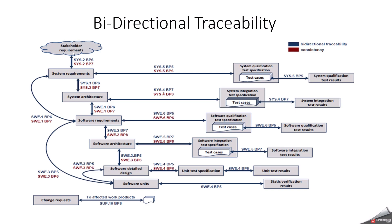For example, first we will start from stakeholder requirements. From there, system requirements will be derived, and then it will go to system architecture. System requirements and system architecture are the upward traceability inputs for software requirements. Software requirements are derived by considering system requirements and system architecture, and they are then given as input to software architecture — meaning SWE2 — and also to SWE3, where you do the software detail design and unit construction. So software requirements are given to software architecture and software detail design, and all of these must be properly maintained as bi-directional traceability.